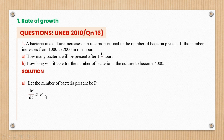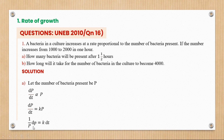Using separable differential equations, we group terms with the same variables: (1/P)dP = k dt. Introducing the integral sign, we integrate both sides. Since k is a constant it can be pulled out of the integral. Integrating gives ln P = kt + c, and this shall be equation one.